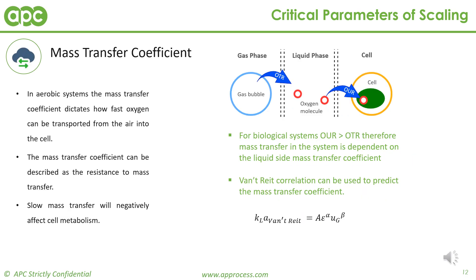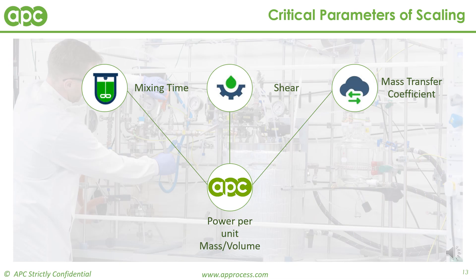The mass transfer coefficient can be described as the resistance to mass transfer. In aerobic systems, it dictates how fast oxygen can be transported from the air into the cell. Slow mass transfer will negatively affect cell metabolism. For biological systems, the Vant-Wright engineering correlation can be used to predict the mass transfer coefficient, KLA. The power dissipation per unit mass, epsilon, is a function of this mass transfer coefficient, and therefore KLA is also a function of the power input into the system. Mixing time, shear, and the mass transfer coefficient are all functions of the power input into the system.